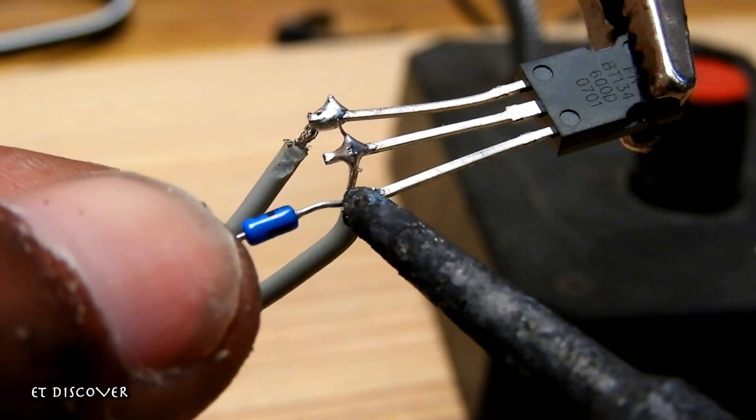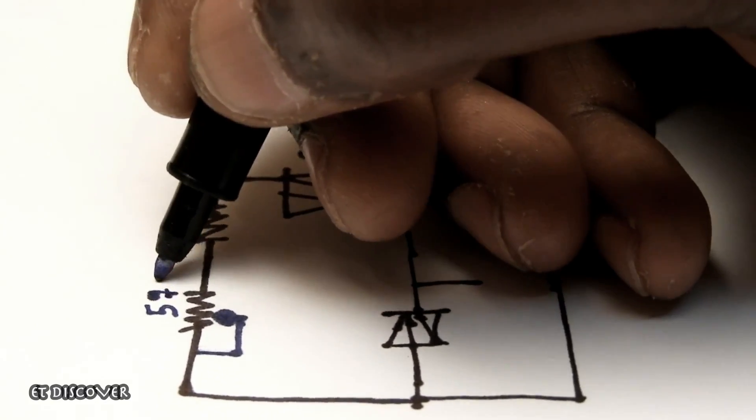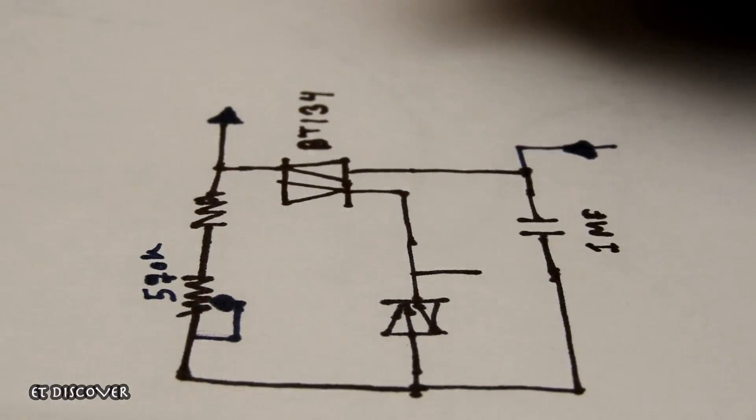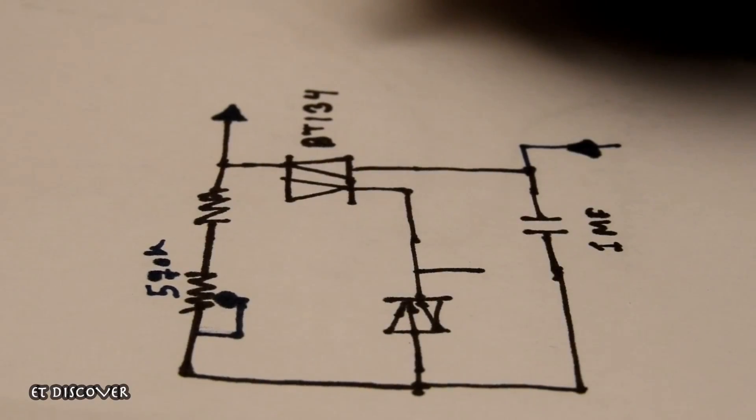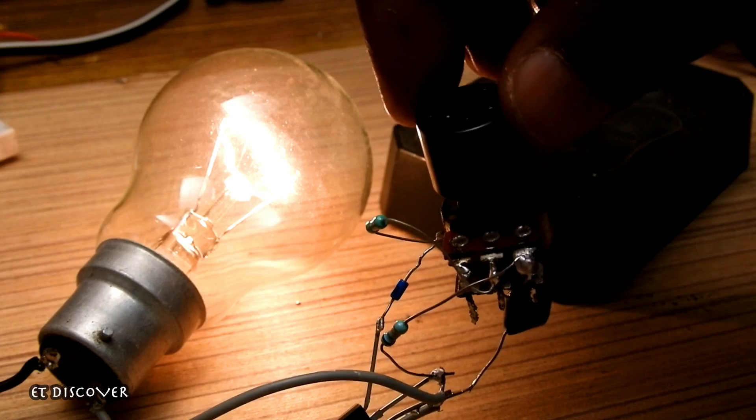So for the safety of the TRIAC, I connect the DIAC in the gate of the TRIAC. So I made a simple diagram by which I can operate AC voltage. So on the basis of this diagram, I made a circuit and it works perfectly.